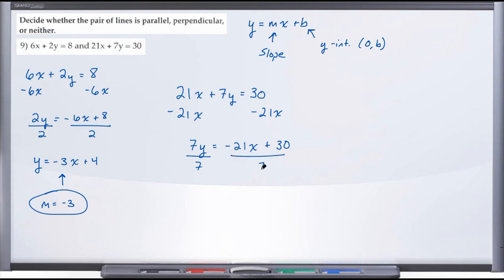we'll divide by 7 on both sides, leaving us with y equals negative 21 over 7, which reduces nicely to negative 3x. And 30 over 7, we'll leave that as a fraction, as 30 over 7. And here we can clearly see that our slope is again negative 3.